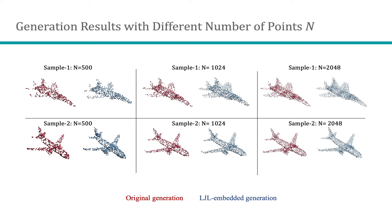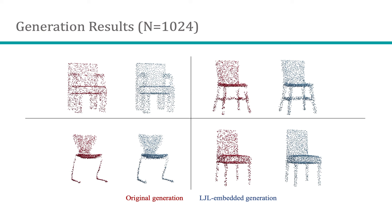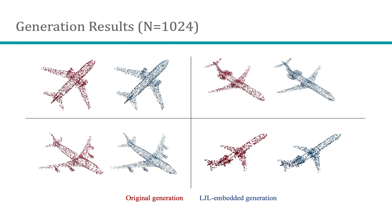Here, we show results of LGL-optimized generated point clouds with different numbers of points. We emphasize on generation tasks that use as few points as possible. Using LGL, we can extend the expressiveness of generation results for fewer points.